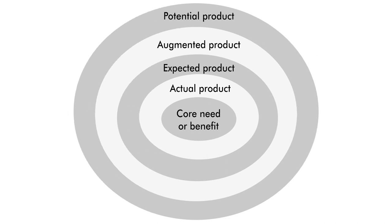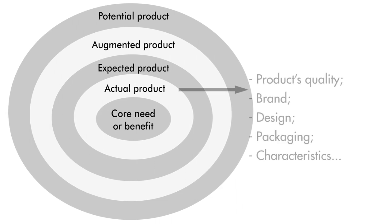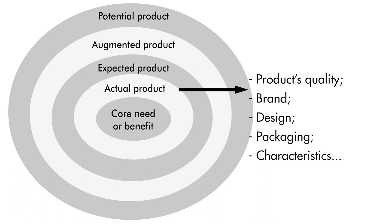The expected product represents the benefits and features that consumers expect. The actual or generic product is the basic item with essential features — this element is fundamental for startups because, in their early stages, they must generate profit as soon as possible and might not have time or resources to develop a full accessorized product. In this case, it's called a Minimum Viable Product (MVP): a simple version with just enough features to satisfy early consumers and provide feedback for future improvements. Examples of variables can be product quality, brand, design, packaging, and characteristics.